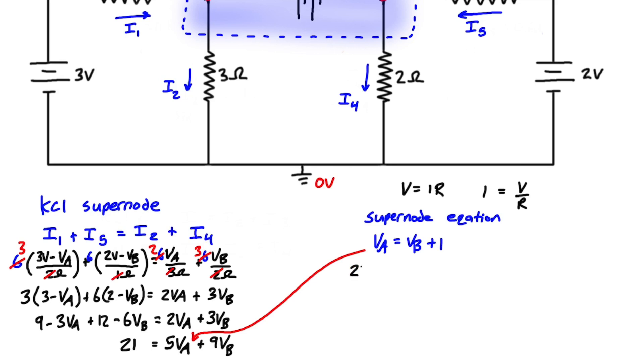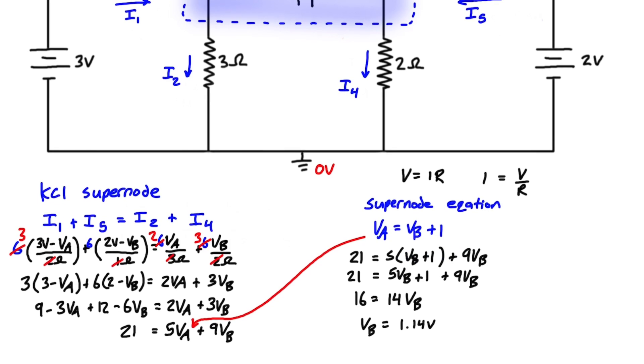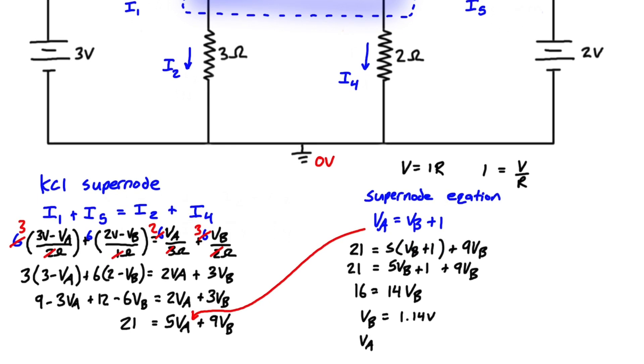We'll get 21 is equal to 5 times VA which is VB plus 1 plus 9 VB and then we can just continue to simplify this and we're going to find that VB is equal to 1.14 volts and then we can just plug this right back in because VA is just equal to VB plus 1 so VA is just going to be equal to 2.14 volts so you can drop a box around that because that might be the answer that you were asked for initially.